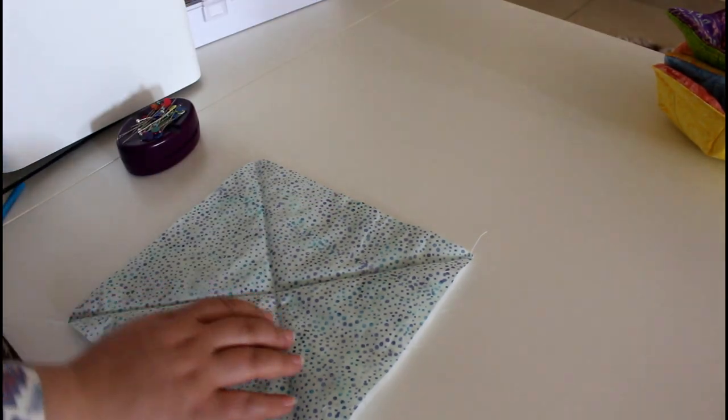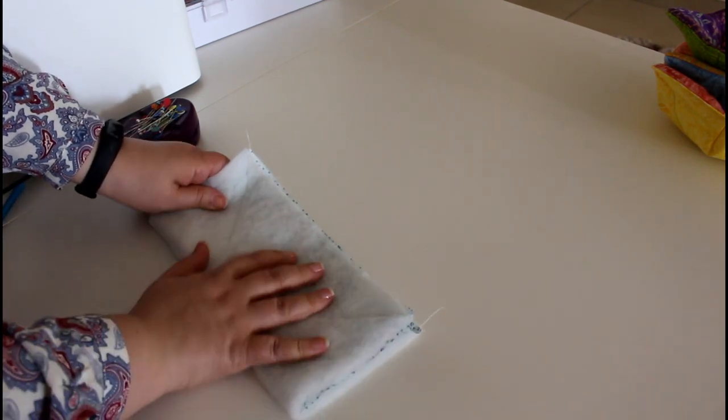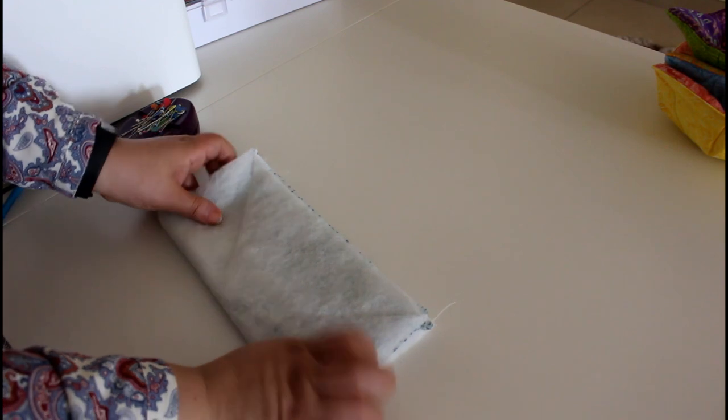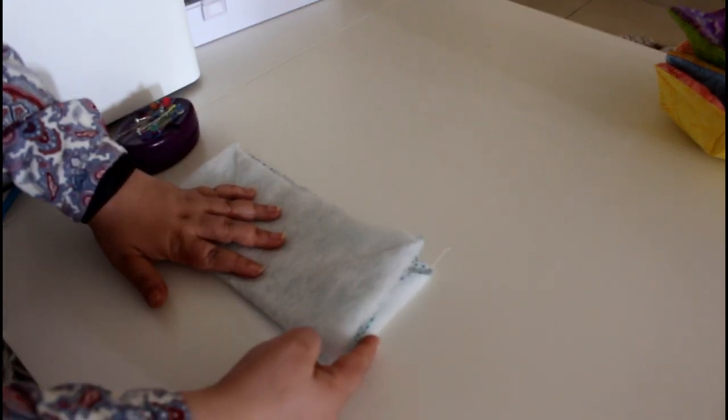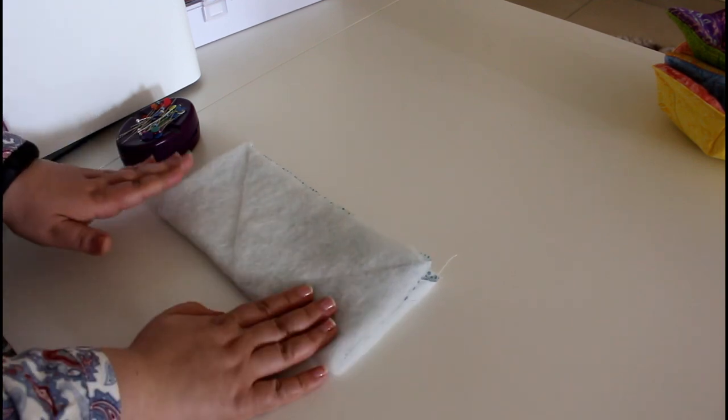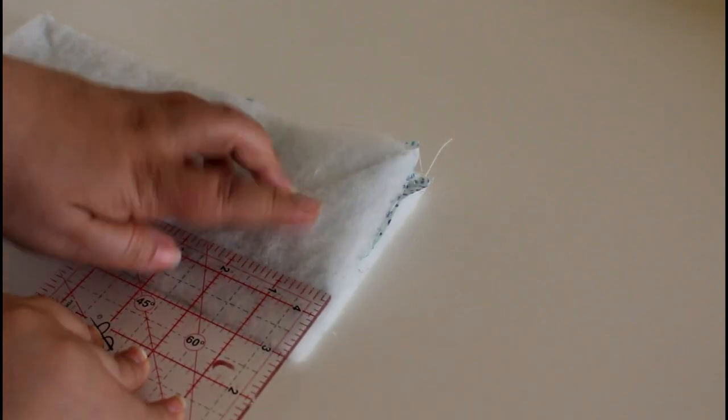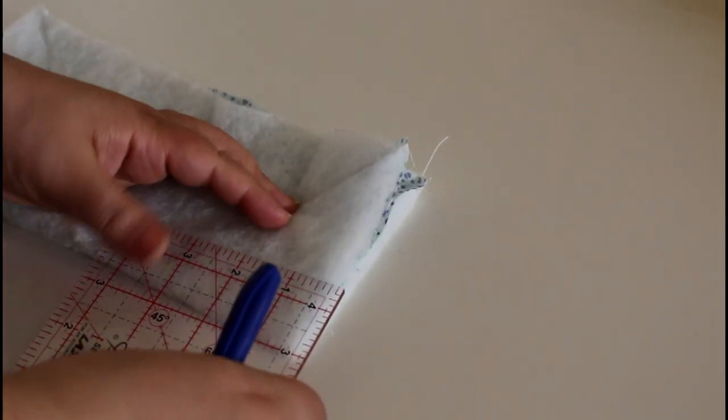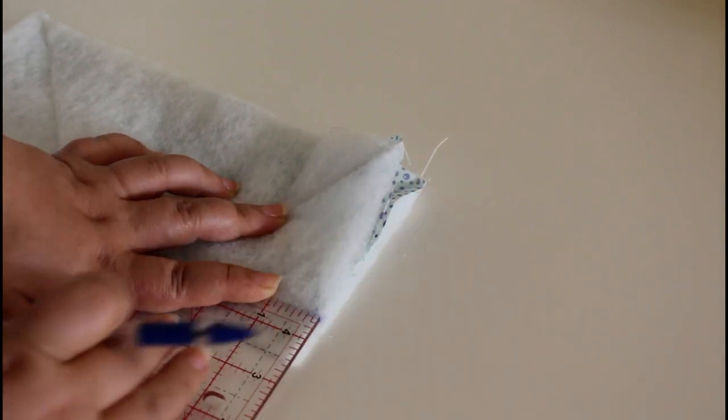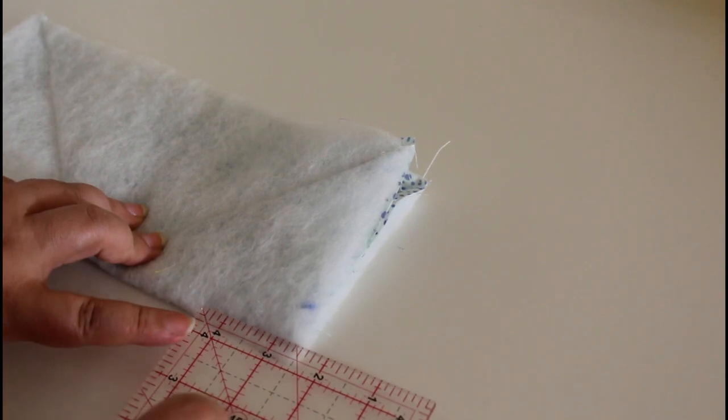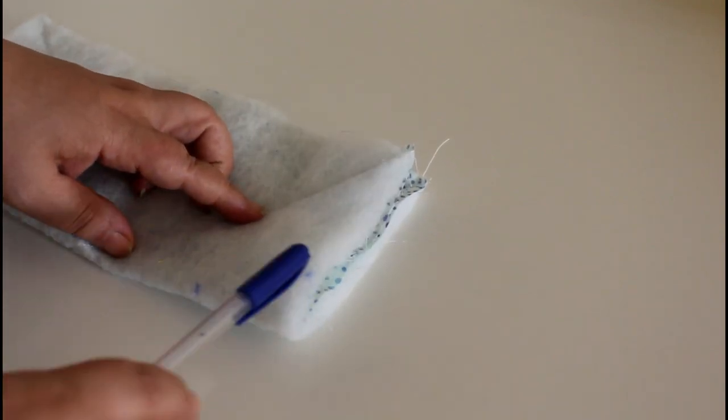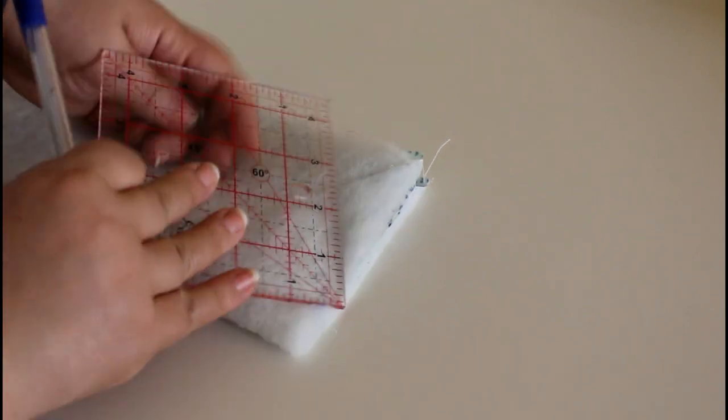So we take marks. We fold in half, and we will measure one inch from this side and two inches inside. We will do this on both sides, on the right and on the left. There we go. Here is one inch, and here is the two-inch mark.